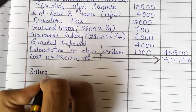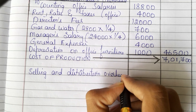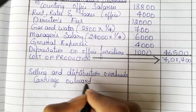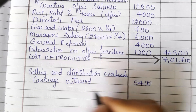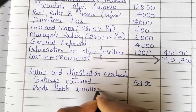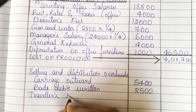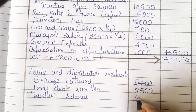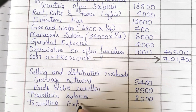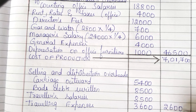We need to add selling and distribution overhead. We are having carriage outward — for delivery charges to customers — that is 5,400. Then bad debts written off: 8,500. Then traveler's salaries, and traveling expenses: 3,600. Adding all these items, you get 26,000.